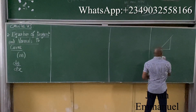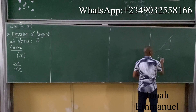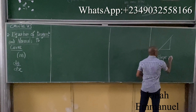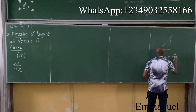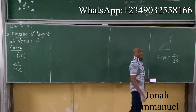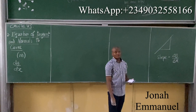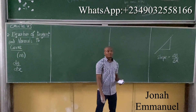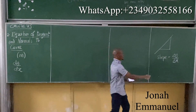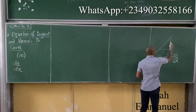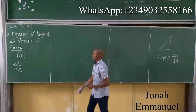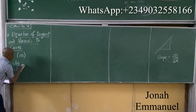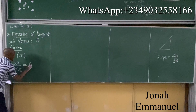We say: take slope. Slope is equal to the change in Y over the change in X — that's dy/dx in differentiation. So we are saying that slope is also equal to M, meaning this expression is equal to slope M.